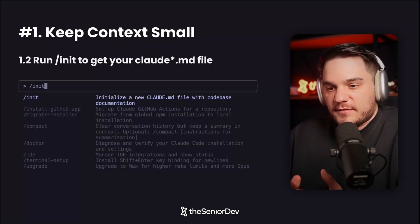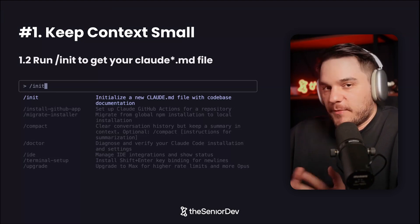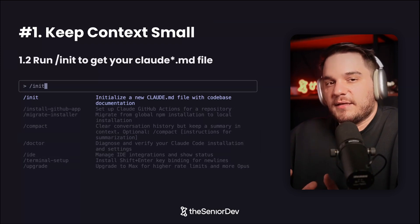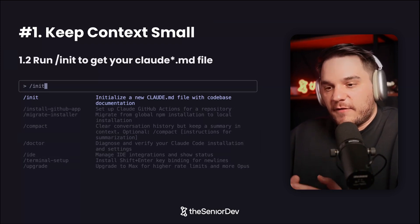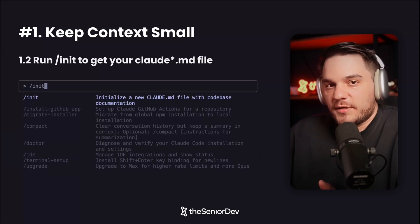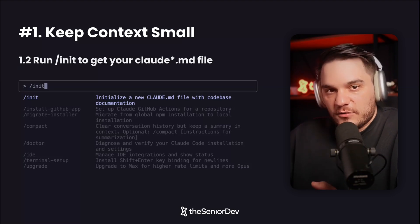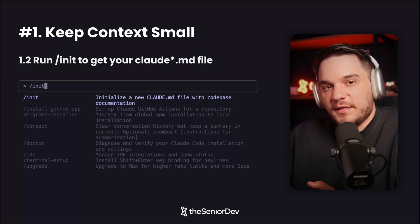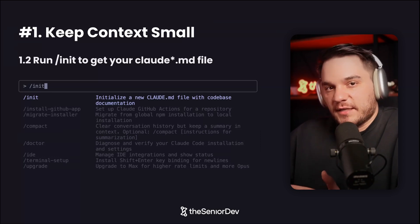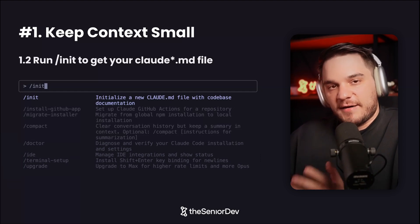The number one way you can keep context small is by running init in your code base and having it summarize your repository. In that run, Claude will write a README for you. I found this feature very cool because Claude actually keeps this up to date. One of the hardest things in development teams was always keeping the README up to date — usually nobody updates it, and when you onboard someone new, they try to find their way around and it's just impossible. So I really love that they do this on autopilot. I think CLAUDE.md is very useful for us humans, not so much for the LLM, because the LLM can actually take in the whole project — but for us, it's super easy to see a high-level map.